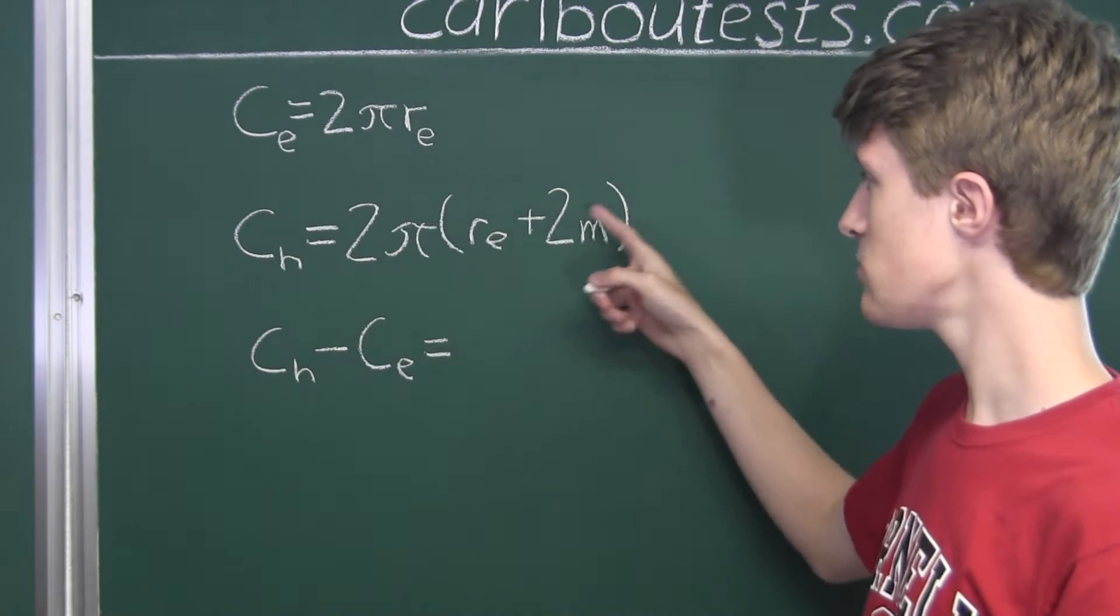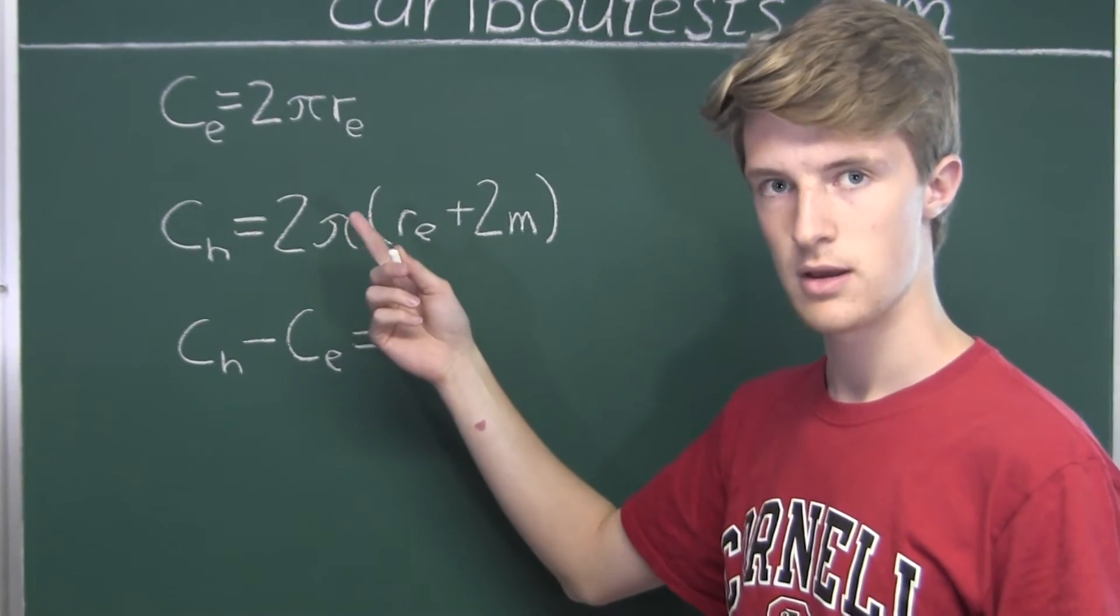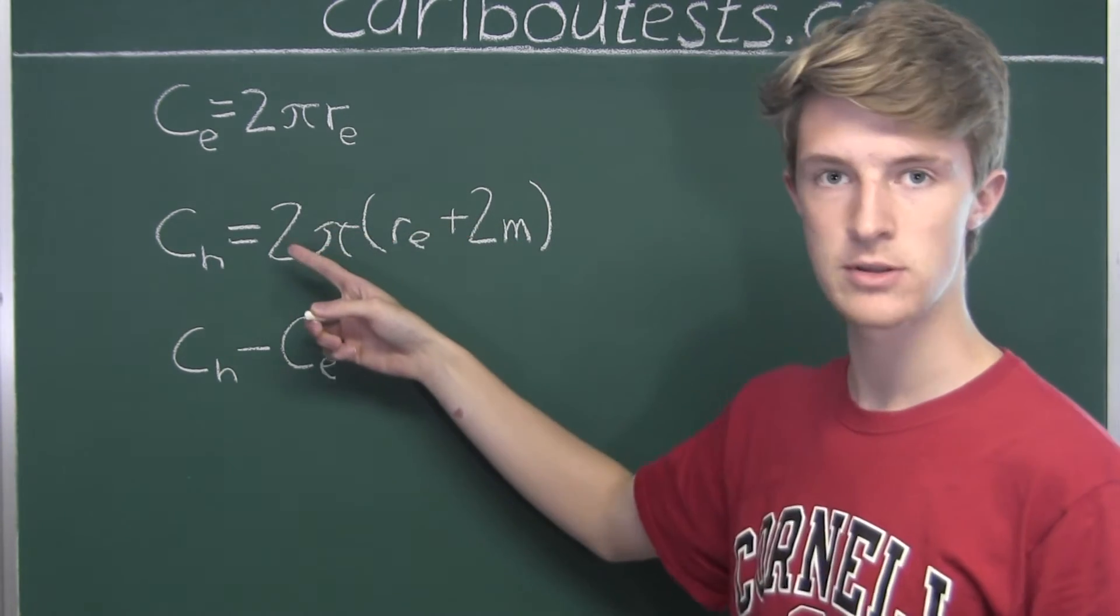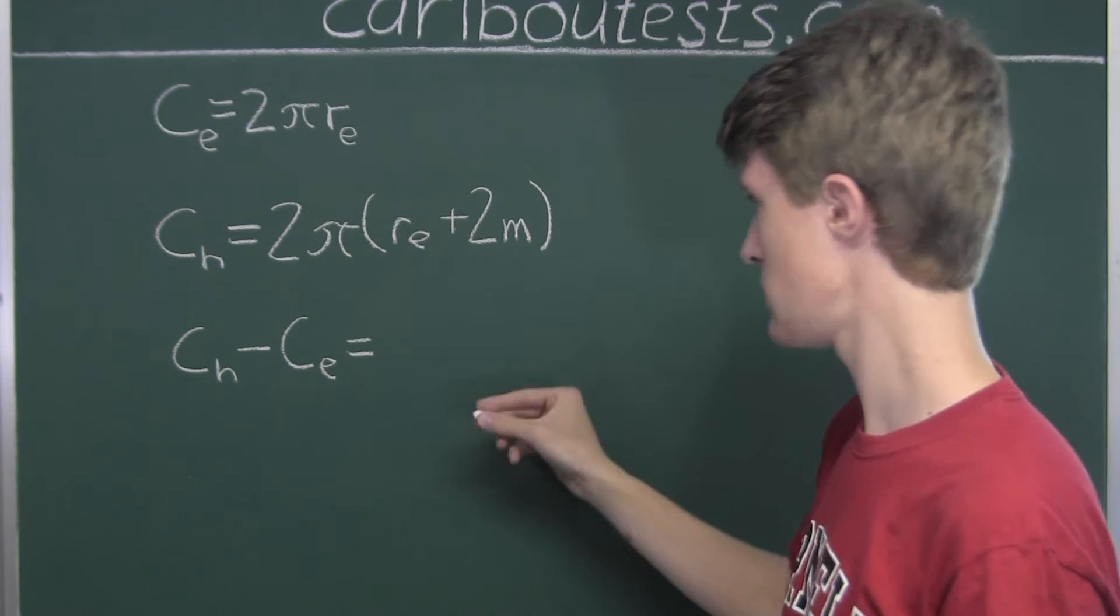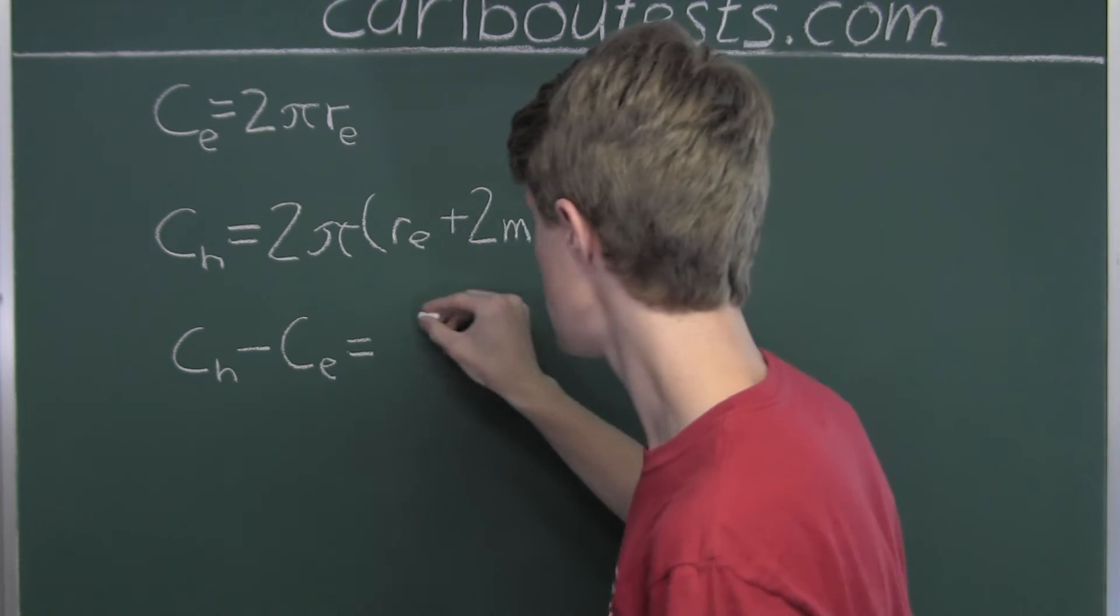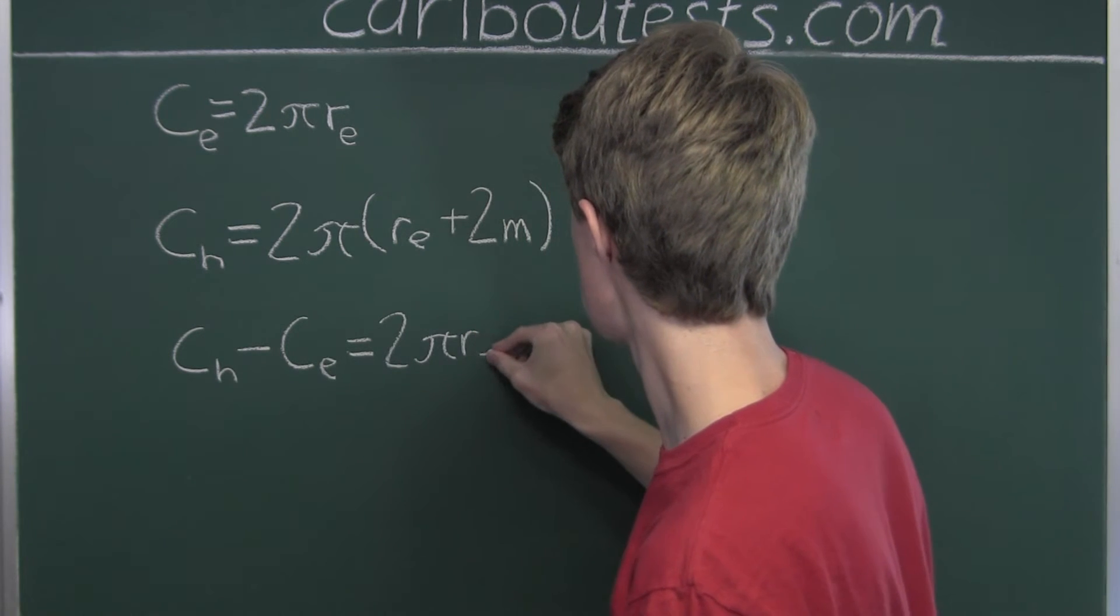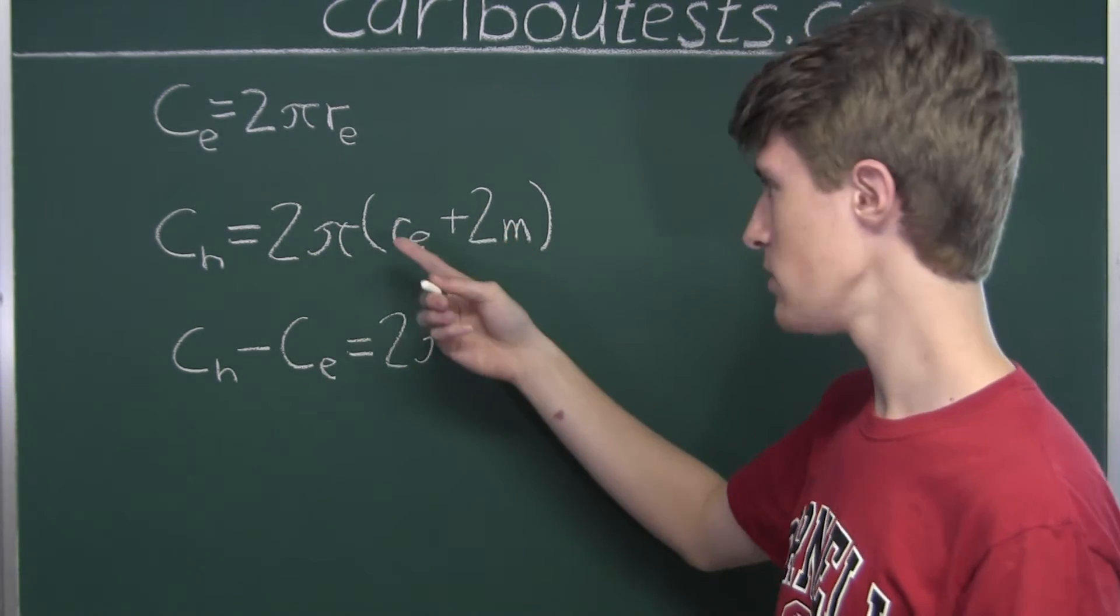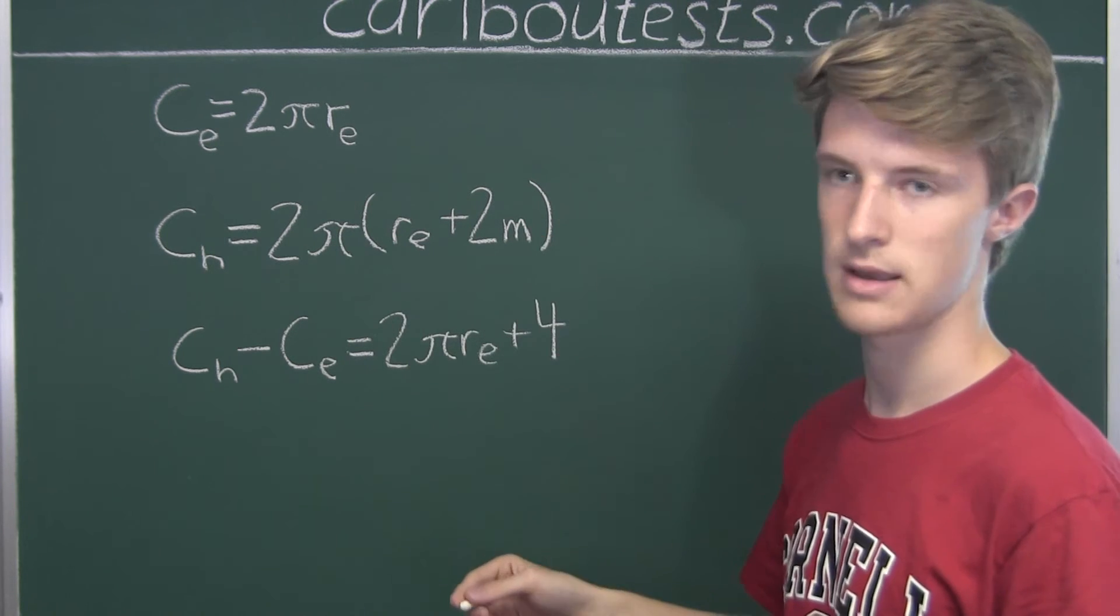For C sub H, we have a bracket, so we use the distributive law. Since we have 2 pi outside the brackets, we multiply 2 pi by all elements inside. So we have 2 pi times R sub E, plus 2 pi times 2m. Well, 2 times 2 is 4, so that's 4 pi m.